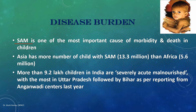Asia has a greater number of SAM children — approximately 13.3 million — compared to Africa's 5.6 million. However, this higher count is due to Asia's larger population, not a higher prevalence. In India, as reported in 2020, 9.2 lakh children were found to be suffering from severe acute malnutrition.